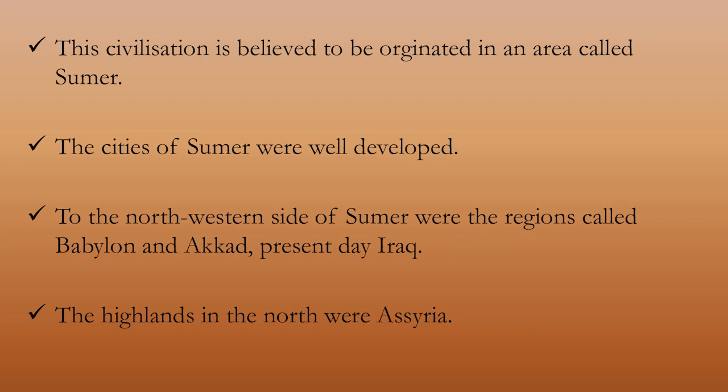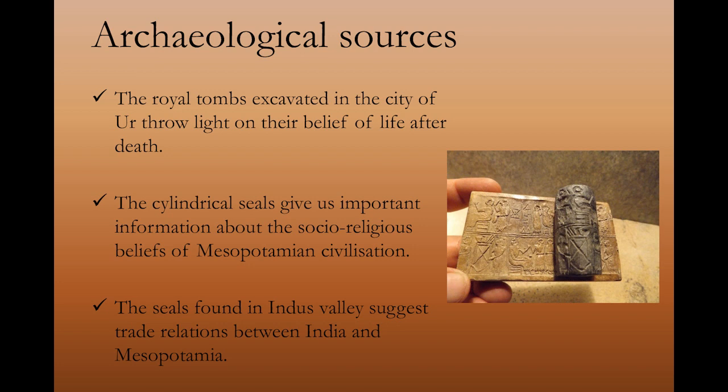Northern highlands were named Assyria. What do archaeological sources tell about Mesopotamia? Royal tombs, cylindrical seals, jewellery and many other items were found from excavations. Daily essentials and favourite items of the king or queen were found in the royal tomb at Ur City. This suggests that Mesopotamians believed in life after death. Inscriptions on cylindrical seals reveal socio-religious beliefs of Mesopotamians, and the seals also suggest trade relations between India and Mesopotamia.